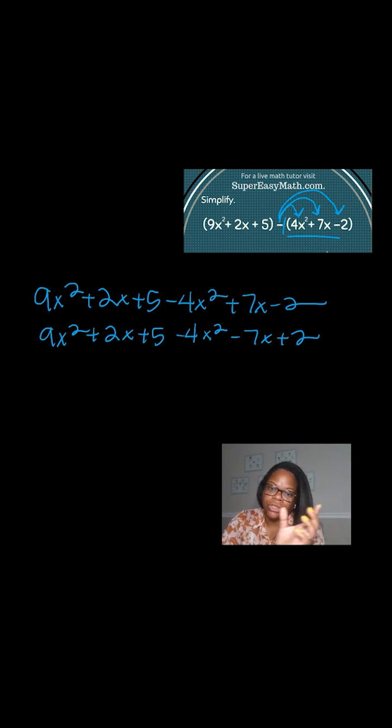Okay? So we have 9x squared plus 2x plus 5 minus 4x squared minus 7x plus 2. Now I can combine like terms because I've changed all of the signs on that second polynomial.